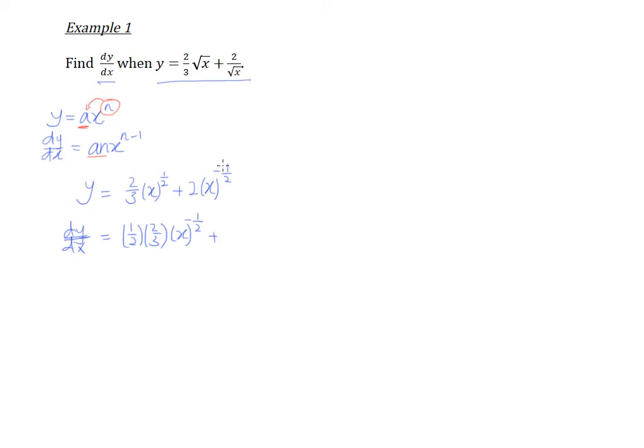And we're going to plus, and we're going to bring down the negative half here, negative half, and we're going to multiply by 2, which is the original 2, and the original x, we're going to minus 1, and that gives us the negative 3 over 2.